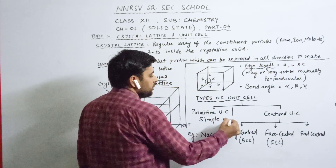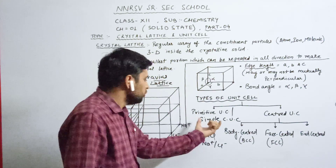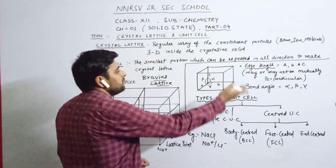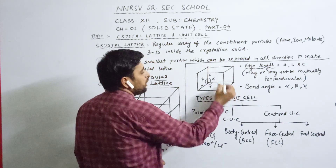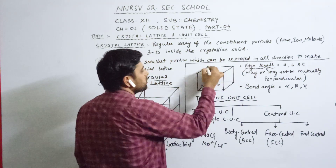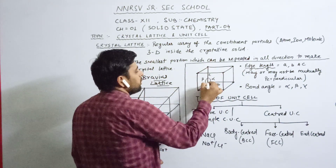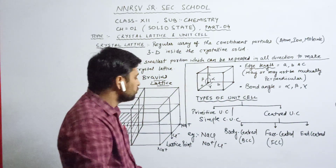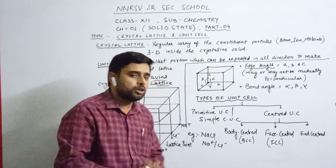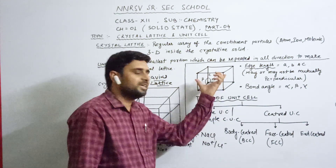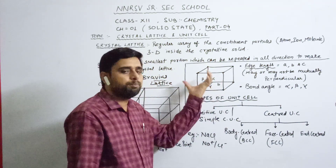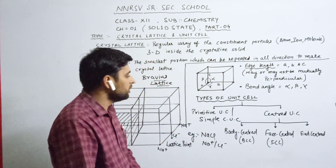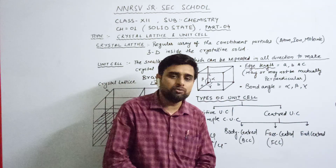In the simple cubic unit cell, the constituent particles are present only at the corners. In a unit cell, eight corners are present. So the total number of constituent particles in the primitive unit cell is eight, all present only at the corners. That is known as the primitive or simple cubic unit cell. The other type is the centered unit cell, where constituent particles are present at the corners as well as at other positions.